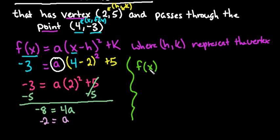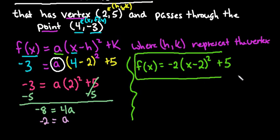We would just simply go back and replace f(x) equals, and we're going to replace a with the -2, and the x minus our h was 2 plus our k, which was 5. So this would be the answer if they asked for it in vertex form: f(x) = -2(x - 2)² + 5.